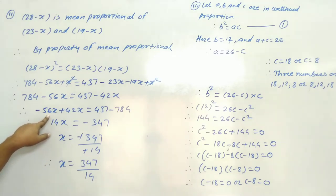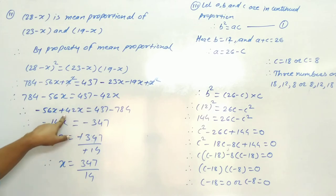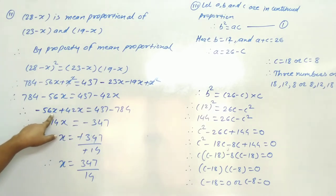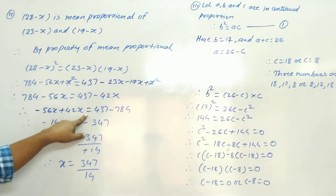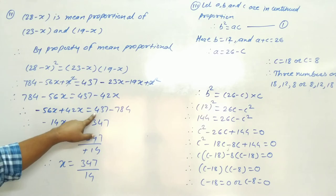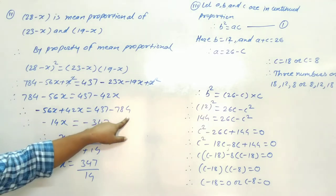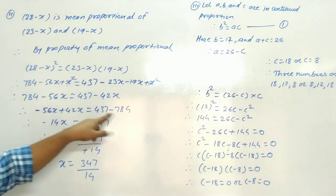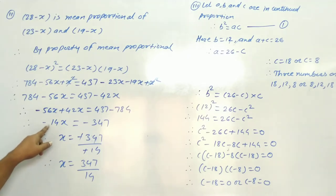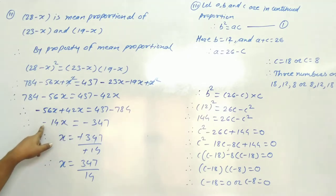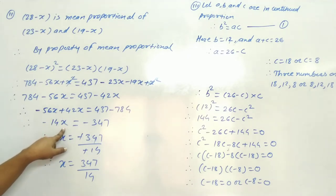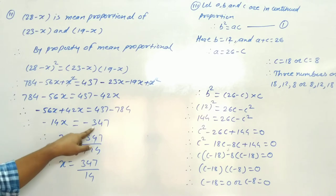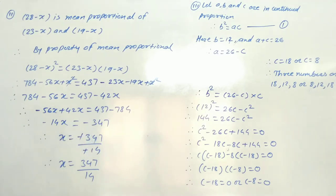Rearranging: minus 56x plus 42x equals 437 minus 784. So minus 14x equals minus 347.